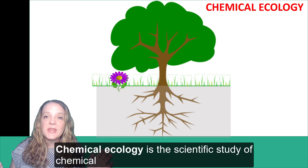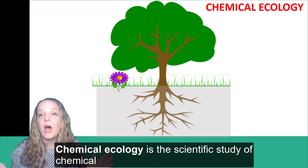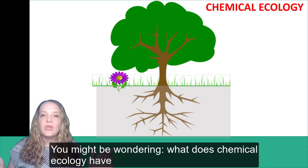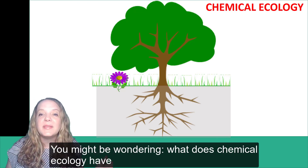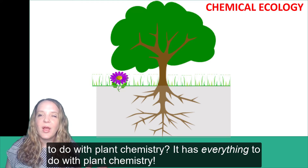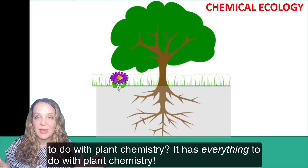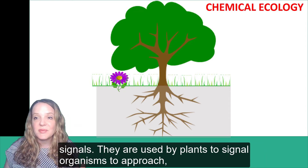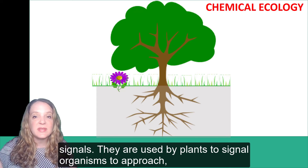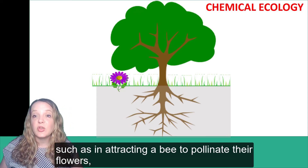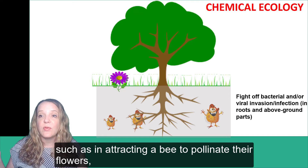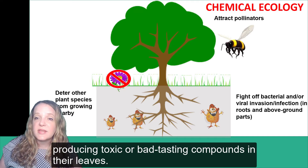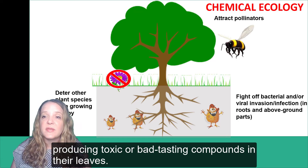Chemical ecology is the scientific study of chemical signaling between organisms in an ecosystem. You might be wondering what chemical ecology has to do with plant chemistry. Well, it has everything to do with plant chemistry. Most secondary metabolites serve in the role of chemical signals. They are used by plants to signal organisms to approach, such as in attracting a bee to pollinate their flowers, or by signaling organisms to be deterred, such as producing toxic or bad tasting compounds in their leaves.